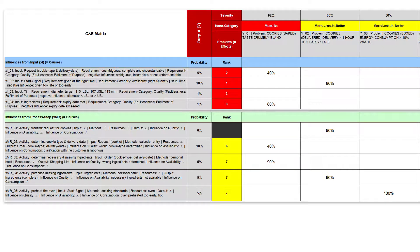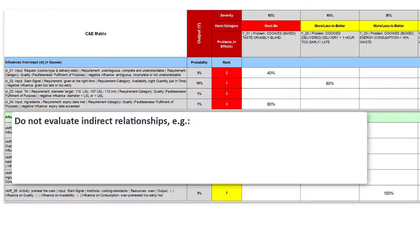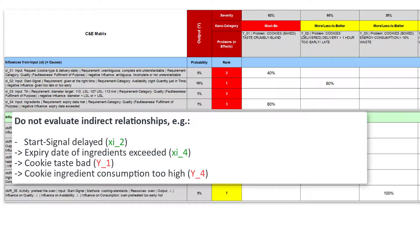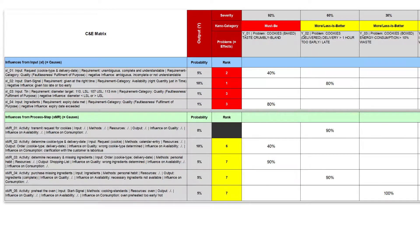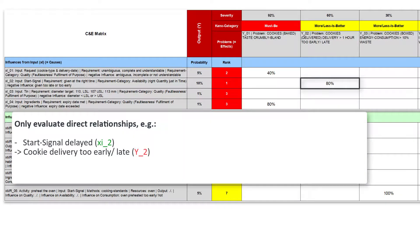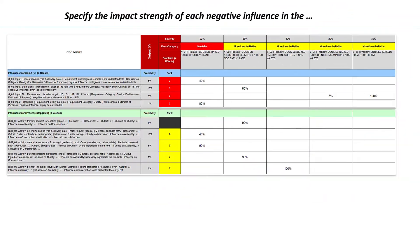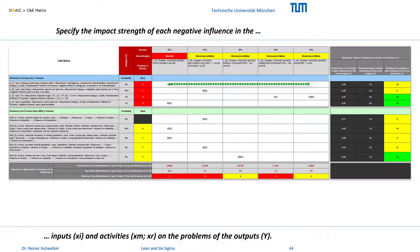Also make sure that you only rate X-Y pairs that are directly related, and not the many possible indirect relationships between influences and problems. If, for example, a delayed start signal leads to the expiry date being exceeded, then this could have an indirect negative effect on the taste of the cookies and on the disposal of inedible ingredients. However, these indirect relationships should not be evaluated. Instead, the direct relationship of the start signal to the delivery of cookies should be assessed, as well as the direct influence of the expiry date on the taste of the cookies, and on the waste or loss of ingredients. Each influence can affect several problems, and each problem can be triggered or increased by several influences.